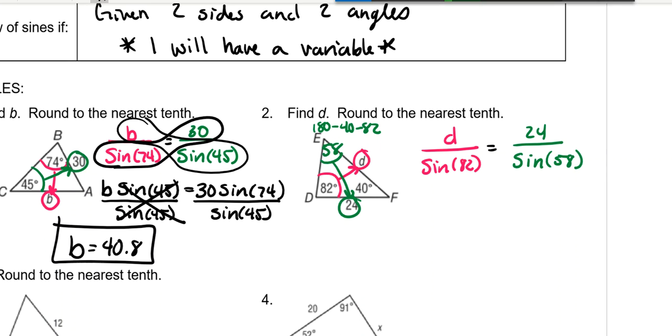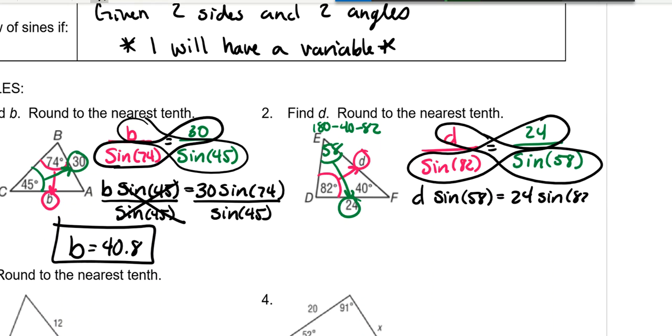Cross multiply. D times the sine of 58 is equal to 24 times the sine of 82. We need to get D by itself. So we divide by the sine of 58 on both sides.